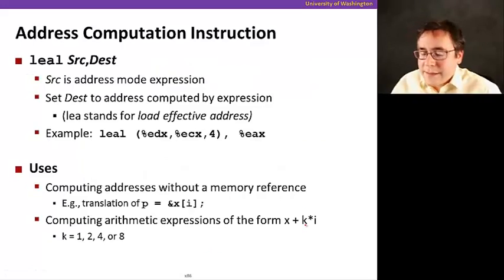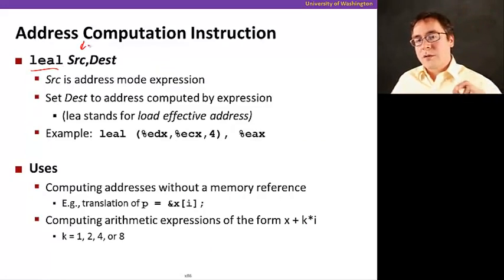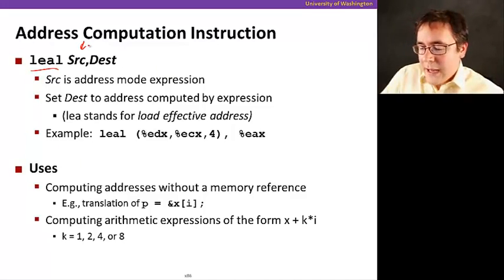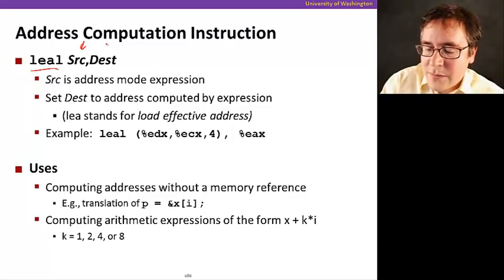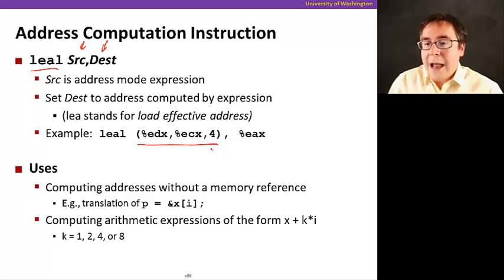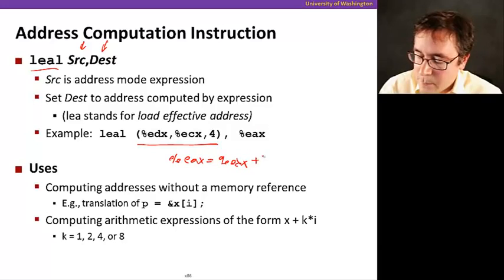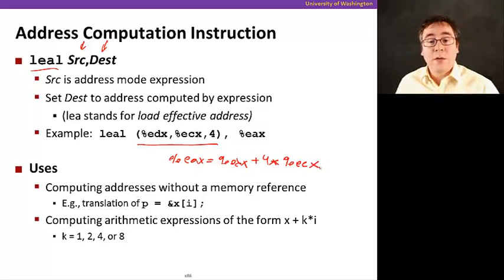There is an instruction in x86 called LEA that gets a source. So, its source operand is an address mode expression, is any of the expressions that I just showed you. And so, what this instruction does, it evaluates that address mode expression and puts the resulting address into the destination operand, into the destination register. For example, if I use this, what is it going to do? Well, EAX is going to get, it's going to give us EAX equals EDX plus 4 times ECX. Isn't that cool?